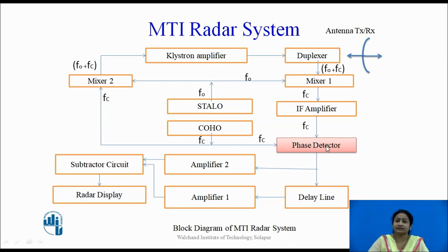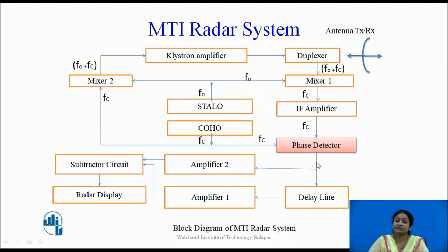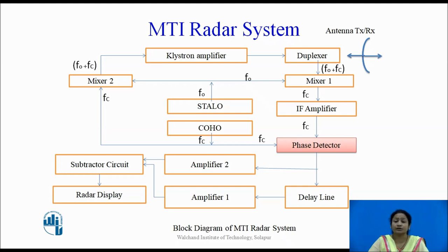The phase detector compares the two input signals — the received signal and the signal from the Coherent Oscillator. Its output depends on the difference between these two signals. The output varies in the form of changes in phase as well as changes in amplitude, for both fixed and moving targets. If the output is from a fixed target, there is no change in phase or amplitude. However, if the received echo signal is from a moving target, there is a change in frequency due to the Doppler effect.